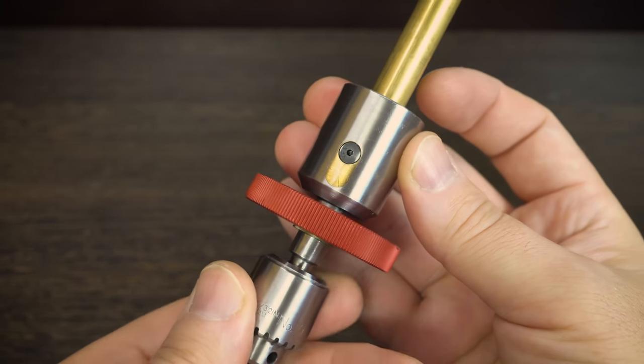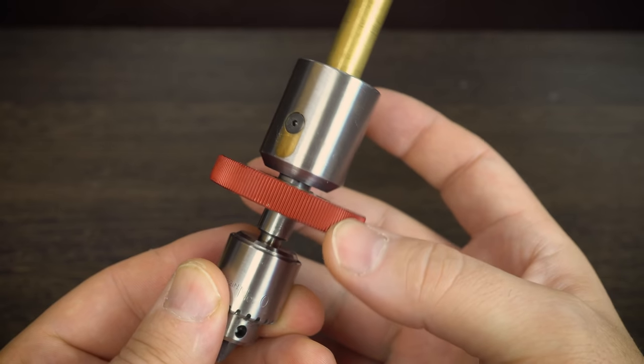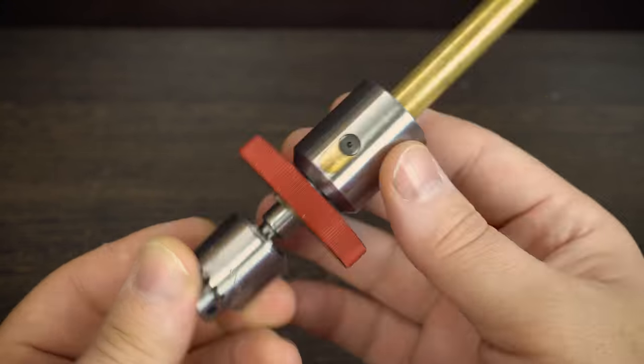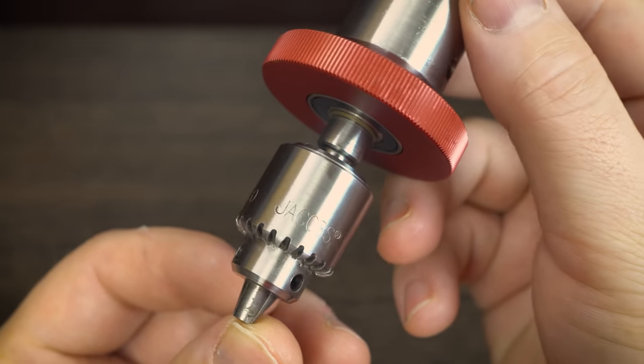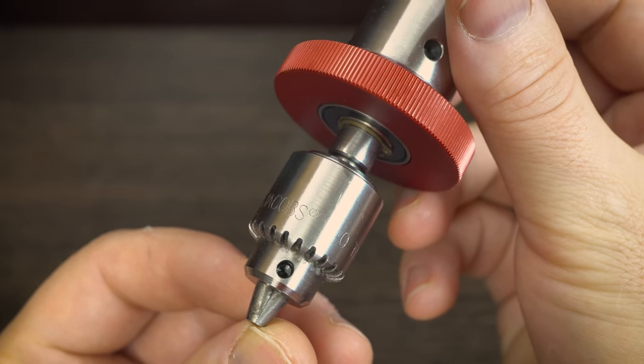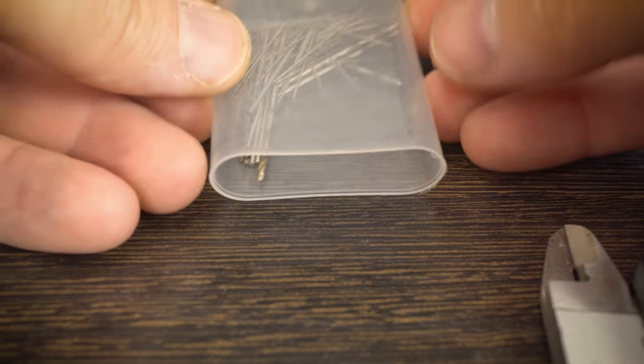Here everything is put together really precisely - there are practically no gaps at all. It has the Jacobs 0 to 4 millimeters chuck with jaws. Of course all this costs accordingly. The chuck jaws also have very nice gaps and now we will test all this out.